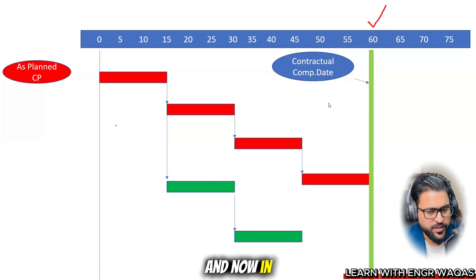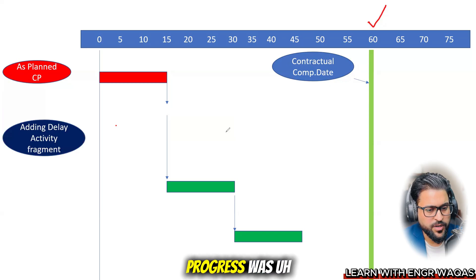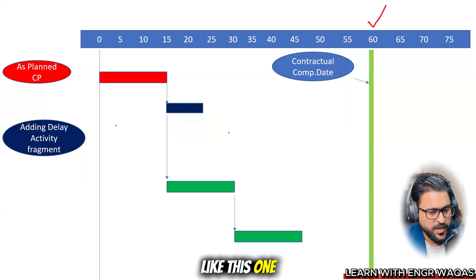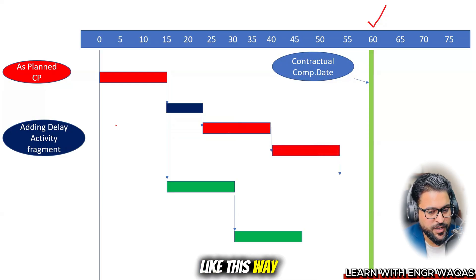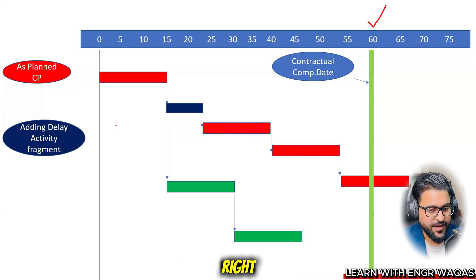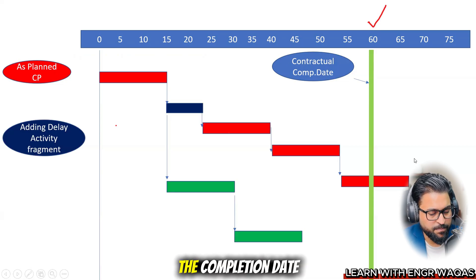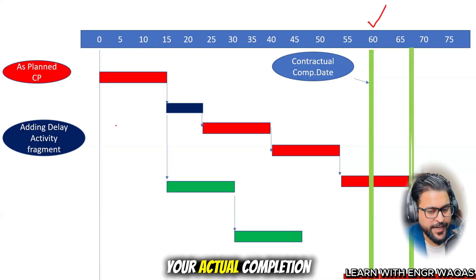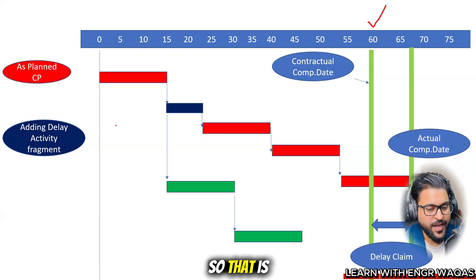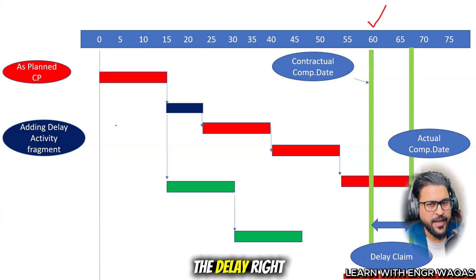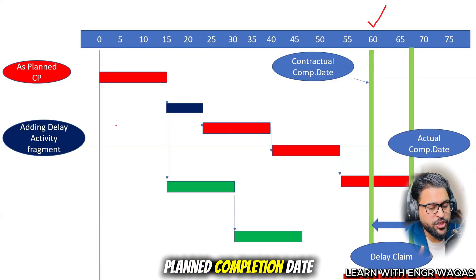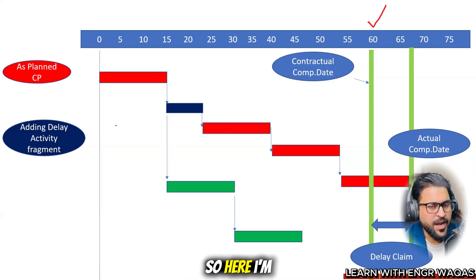In the next slide you can see how an unforeseen delay event has disturbed the original baseline — the logic has shifted. Your plan moves forward: you planned to complete on day 60 but the completion date is now pushed out. You can see the impact of this delay: the project was pushed from the original planned completion date to a revised completion date. That gap is the actual delay.